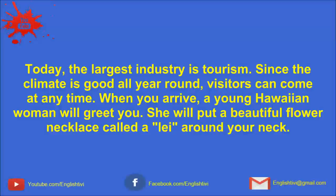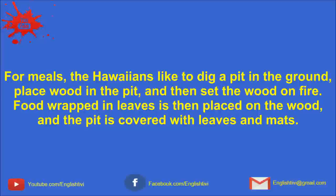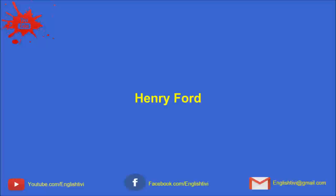When you arrive, a young Hawaiian woman will greet you. She will put a beautiful flower necklace called a lei around your neck. Hula dancers entertain tourists. Hula dancers wear skirts made of long leaves. Each dancer tells a story by moving their arms and hands in a certain way. For meals, the Hawaiians like to dig a pit in the ground, place wood in the pit, and then set the wood on fire. Food wrapped in leaves is then placed on the wood, and the pit is covered with leaves and mats. A feast cooked this way is called a luau. These traditions nowadays are usually performed for tourists or on special holidays. Hawaii is the 50th state of the United States, and its people enjoy all the advantages of the modern world.